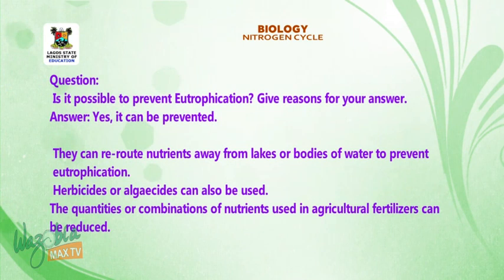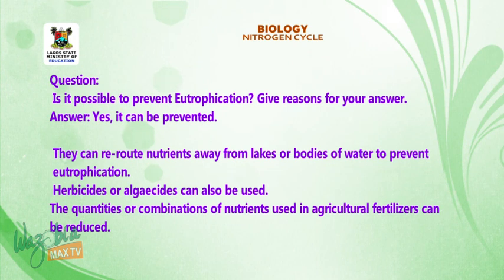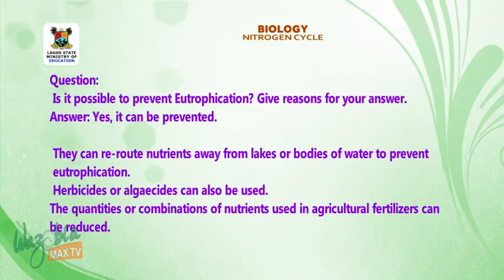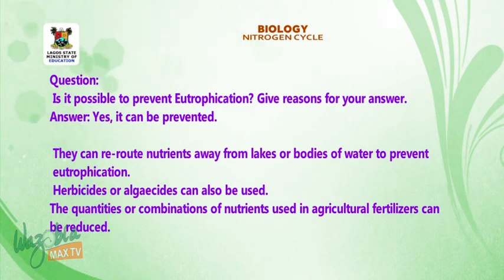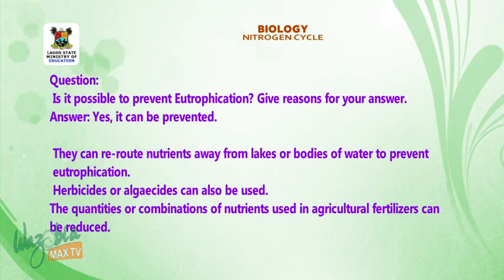Question: Is it possible to prevent eutrophication? Give reasons for your answer. Answer: Yes, it can be prevented. Ways: They can reroute excess nutrients away from lakes or bodies of water to prevent eutrophication. Herbicides or algicides can also be used. The quantities or combination of nutrients used in agricultural fertilizers can be reduced.